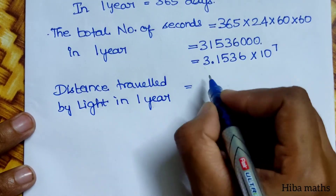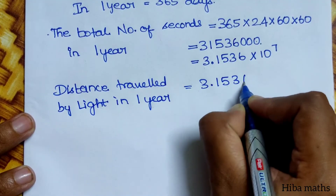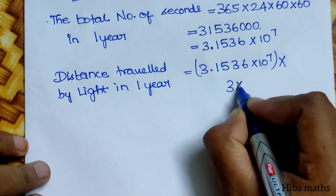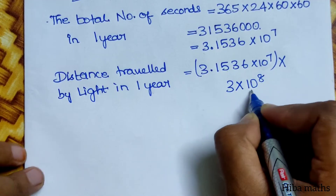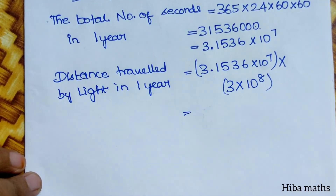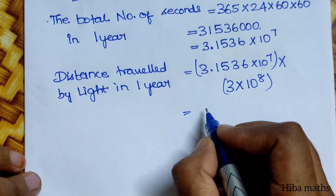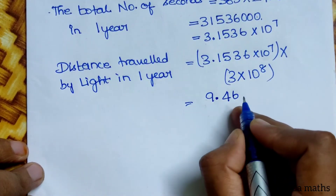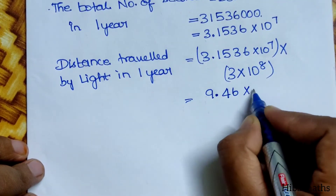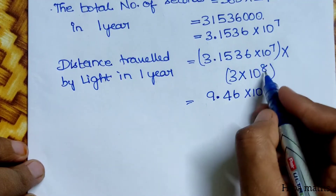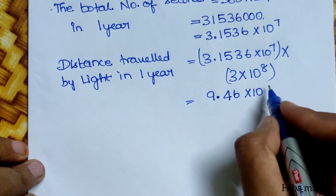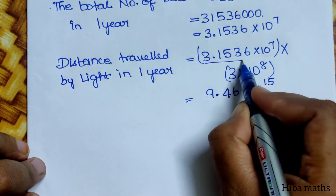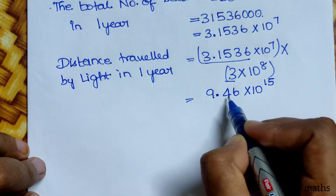We convert to seconds: 3.1536 into 10 power 7 seconds in one year. Light speed is 3 into 10 power 8 meters per second. Multiplying these together: the powers add — 7 plus 8 equals 15. So 3.1536 multiplied by 3 equals 9.4608, giving us 9.4608 into 10 power 15 meters.